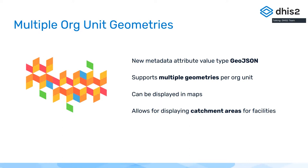We're no longer constrained to just a single geometry per orgunit. This is helpful for things like catchment areas — if you'd like to define a catchment area for a facility and not just the point of a facility. Or if you'd like to have both the geographical boundaries of a district as well as the administrative boundaries, we can do that and display those in maps.